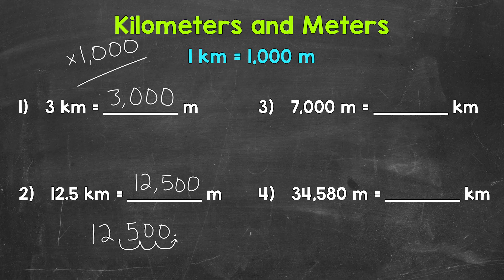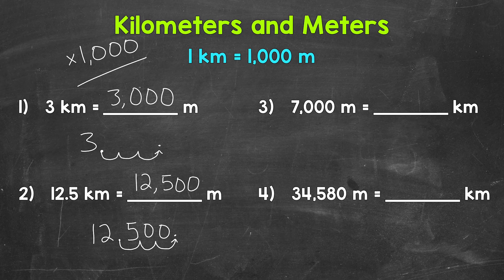Let's try that same strategy for number 1 and see if we still get 3,000. I will rewrite 3 here — the decimal goes after a whole number. Let's move the decimal 3 times to the right: once, twice, and then 3 times. Fill these gaps with zeros, and we get 3,000 that way as well. So to recap, when we go from kilometers to meters, we multiply by 1,000, and we can move the decimal 3 times to the right to do that.